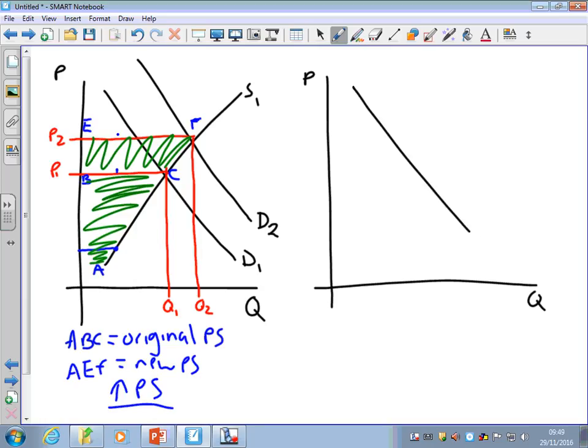Now on the other diagram, we can think about what happens when supply increases. Maybe there's been a reduction in the cost of production which has led to an outward shift in supply.